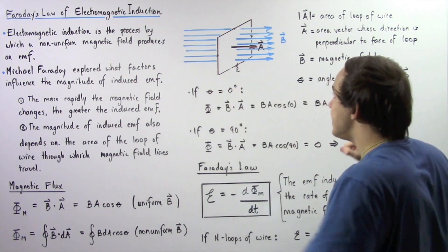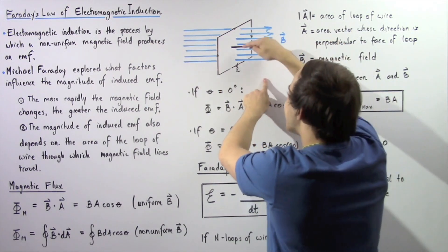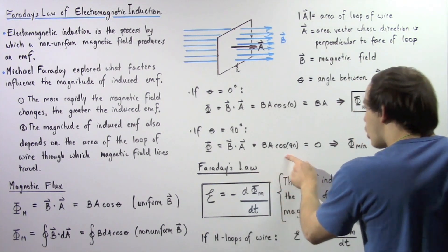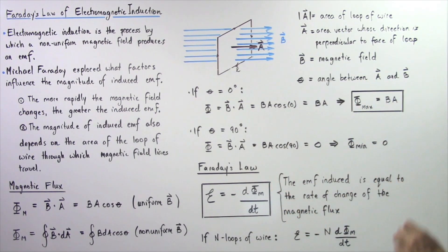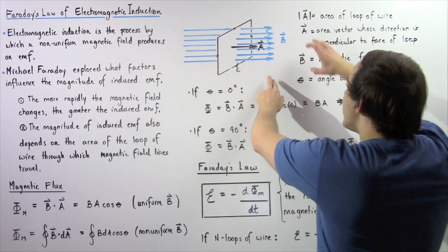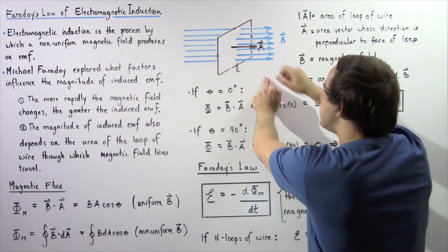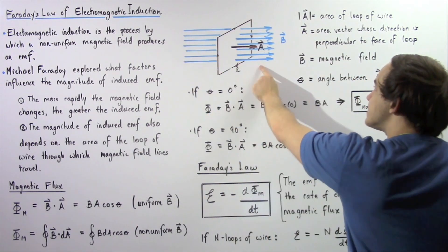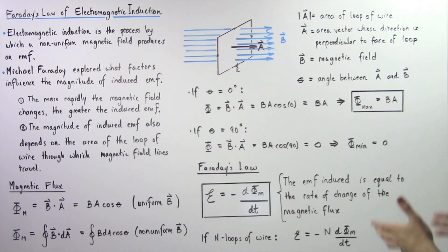On the other hand, if we orient our loop of wire so that the area vector points at a 90-degree angle with respect to the magnetic field lines, then cosine of 90 is zero, so the magnetic flux will be zero. The minimum magnetic flux is zero, occurring when the magnetic field lines point at a 90-degree angle with respect to the area vector. In this orientation, none of the field lines pass through the area of the loop, so magnetic flux is zero.